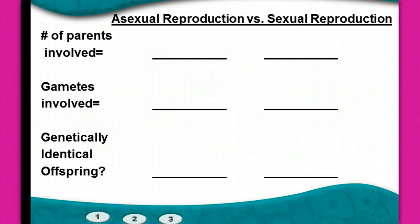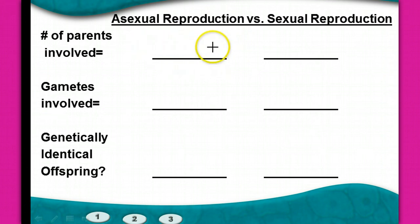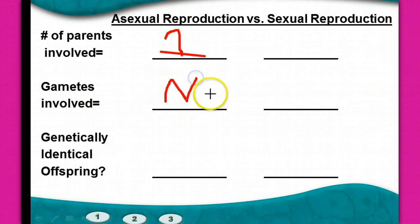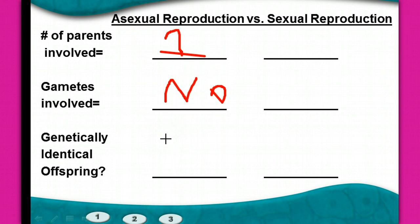Asexual reproduction versus sexual reproduction: we're going to look at the number of parents involved, the gametes involved, and whether it produces genetically identical offspring. Asexual reproduction involves a single parent — one cell reproducing to create another. Are there gametes involved? No. Are offspring genetically identical? Yes, there's not a whole lot of genetic variation.